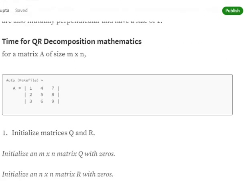Now I will be showing you how to perform a QR decomposition. We'll be first taking a matrix A: 1 4 7, 2 5 8, 3 6 9. We'll be initializing two matrices Q and R with zeros.